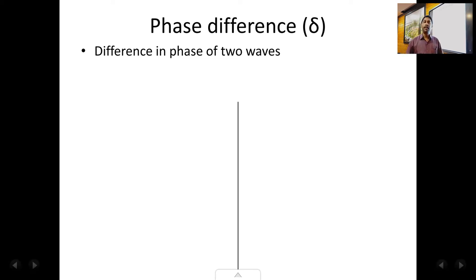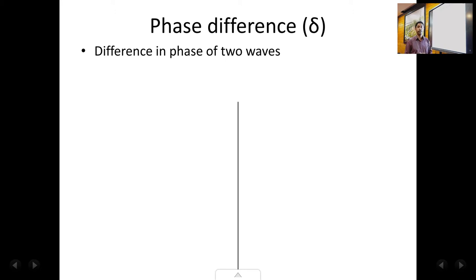Welcome back students. This is the second lecture in the chapter of interference. In the previous lecture we had studied about optical path, optical path difference, and I had introduced you to what is meant by phase of a wave. In this lecture we are going to discuss about phase difference — the difference in the phase of two or more waves — and two special cases: waves in phase and waves out of phase.